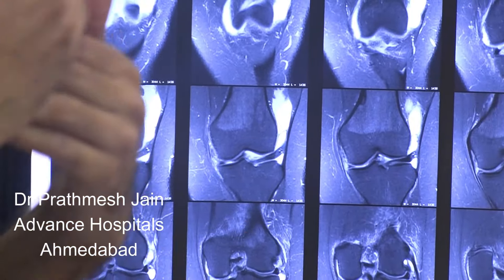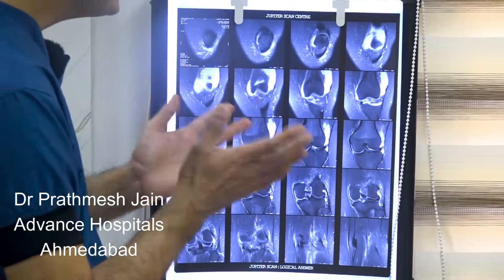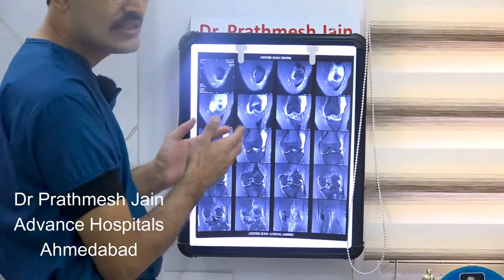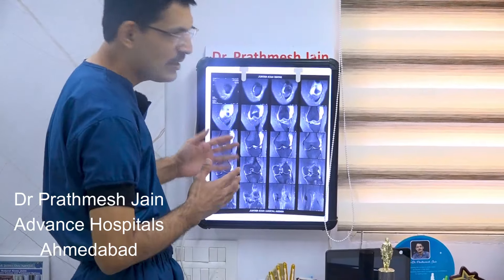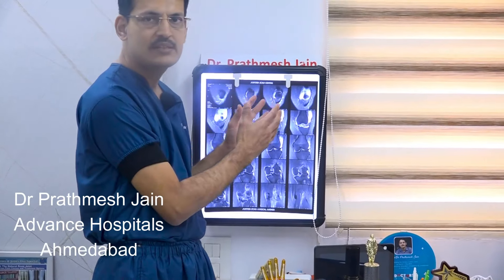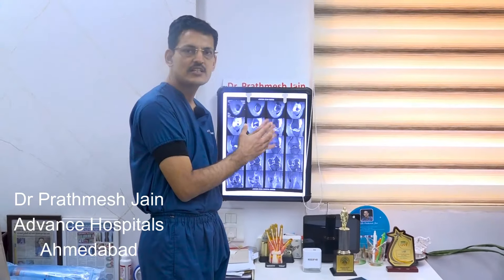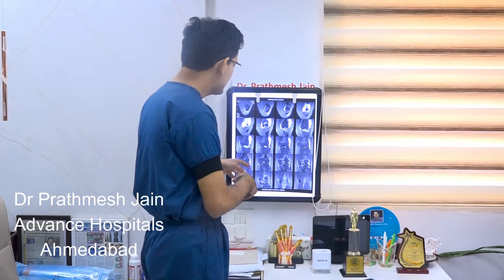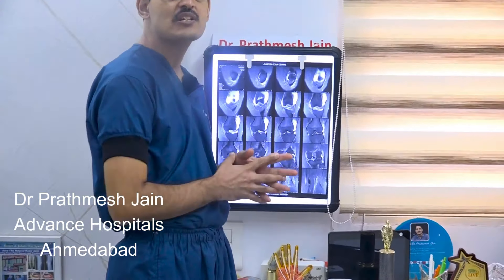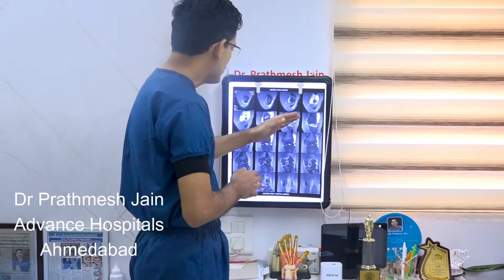The meniscus is locked into the notch and we need to reduce it by our maneuvers and then repair it. In young patients like this 16-year-old with an acute injury, these tears must be repaired — if you simply resect the meniscus, these patients will develop osteoarthritis very fast in life. It is very imperative that we repair the meniscus.